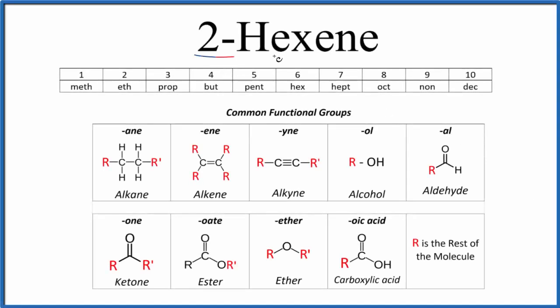Let's write the structural formula for 2-hexene. If we wrote the molecular formula, that would be C6H12, but that doesn't give us enough information about how the atoms are bonded together. For that, we need the structural formula of 2-hexene.